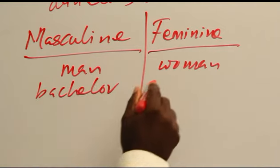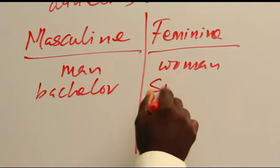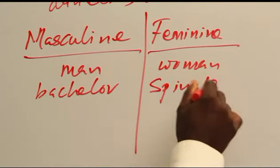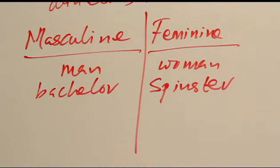So now if you say bachelor, the feminine is what? Spinster — somebody who is not yet married, who is not married.